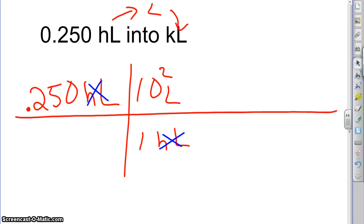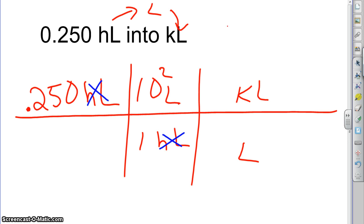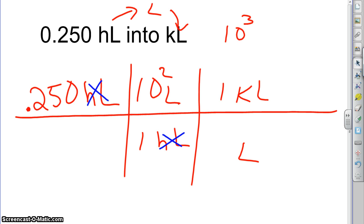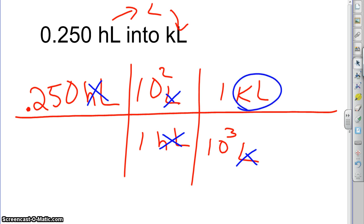So now we've got it into the base unit, liter, and we want to get it from the base unit into kiloliter. You can just keep extending your lines to the right for as many conversions as you need to make. We want to get rid of liter now, so we put liter on the bottom and introduce the new unit. We want kiloliter, so kilo means 10 to the 3rd, or 1,000. We always need a 1 — the 1 goes with the prefix — and 10 to the 3rd goes on the other side. The only unit left standing is kiloliter, so we are done with everything except the math.